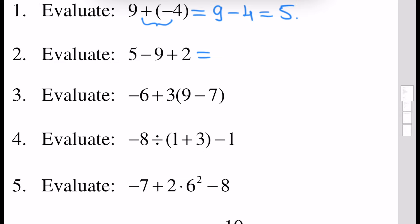5 minus 9 gives us minus 4 plus 2, which is minus 2. Or in other words, minus 4 can be written as minus 2 and minus 2, and here plus 2 and minus 2 will offset each other and we will have minus 2.